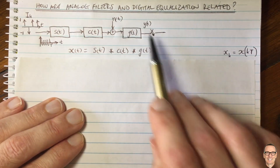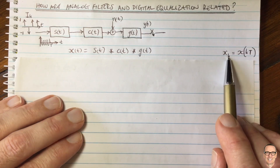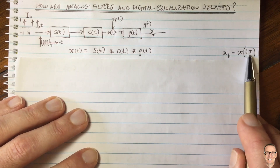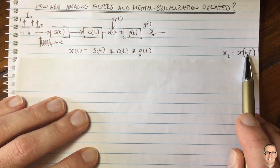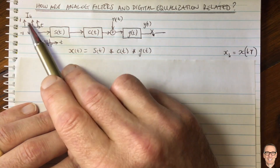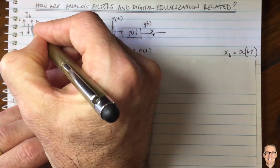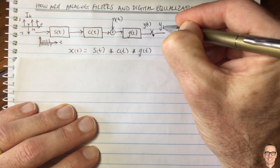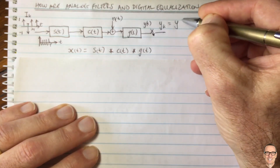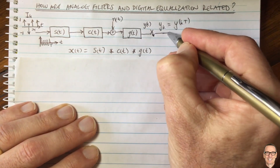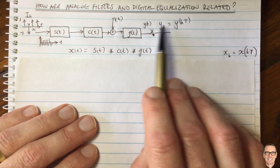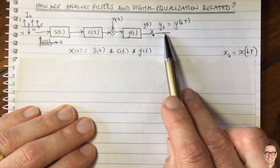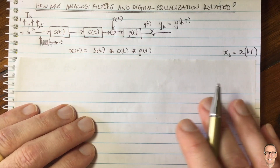When it's sampled, the digital version x_k after sampling is just the overall value at particular times. This is continuous, but we sample at times k times capital T, where capital T is the time for a symbol to be sent — so that's T, 2T, and so on. The sampled signal y_k equals y at k times capital T. These are all analog filters, but we're sending digital communications, so let's look at their relationship.